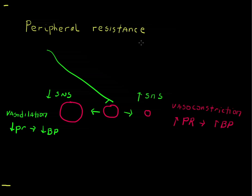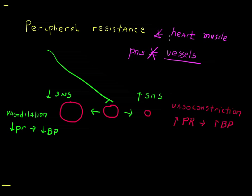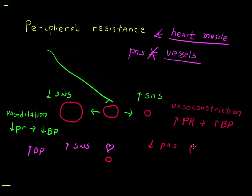One important clarification: the parasympathetic nervous system does not go to blood vessels to control resistance, and it does not go to the heart muscle either. That is a very frequent mistake that students make. To increase blood pressure, you would increase the sympathetic nervous system signal to the heart and decrease the parasympathetic nervous system signal — and the parasympathetic only goes to the heart, not to blood vessels.